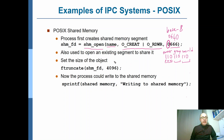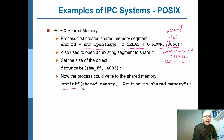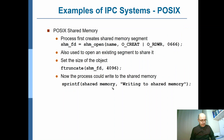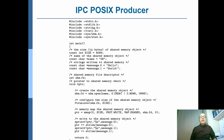You can set the size of the shared memory segment using the ftruncate function, and you can also write to that shared memory segment using, for example, sprintf — anything that takes a file descriptor can write there. Let's have a look at this code — this is a very simple implementation of the POSIX producer.